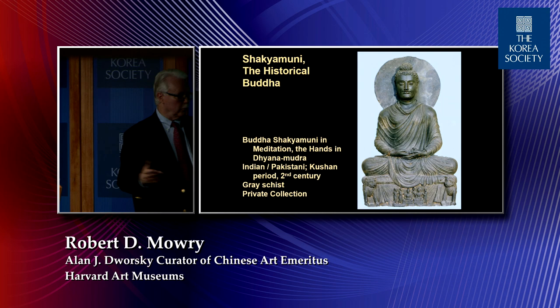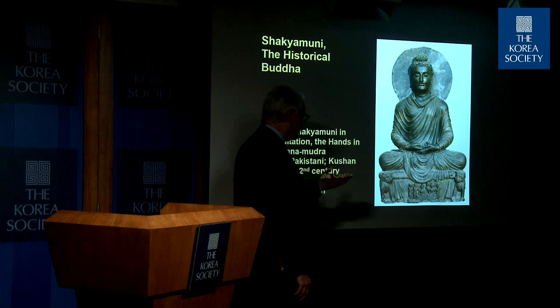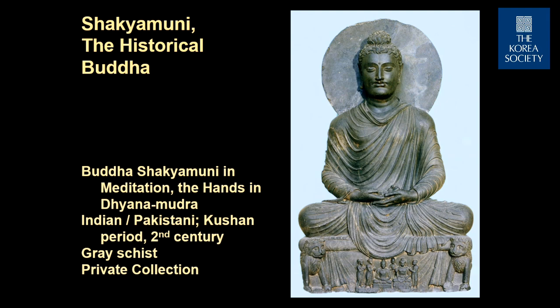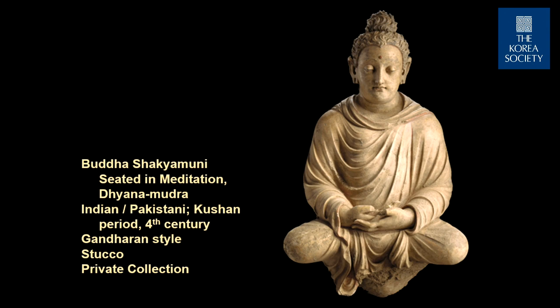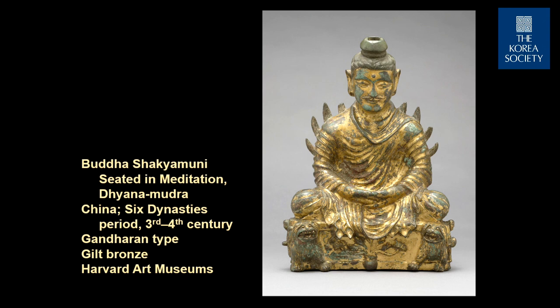When meditating, the Buddha is always seated, hands in the lap, usually palm up, the right hand over the left hand. Whenever you see that — the meditation mudra — whether in early India in what is now Pakistan, or in China from the 3rd to 4th century, or in Korea, it's exactly the same mudra, indicating that he is meditating just before his enlightenment.